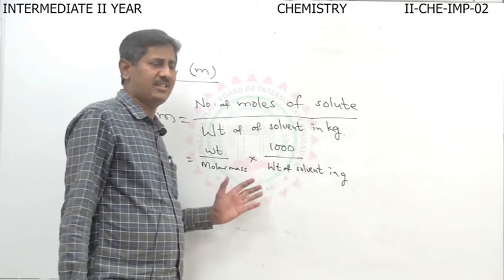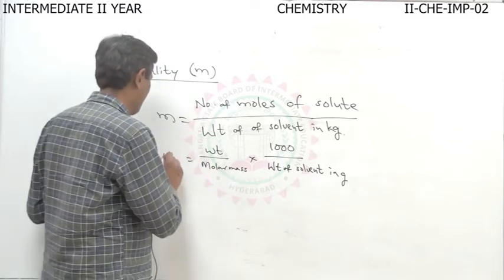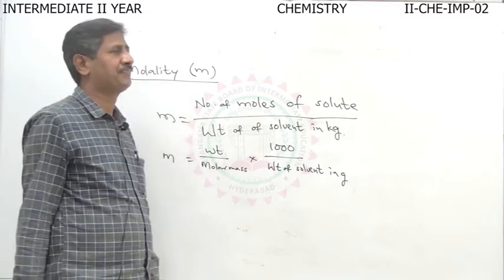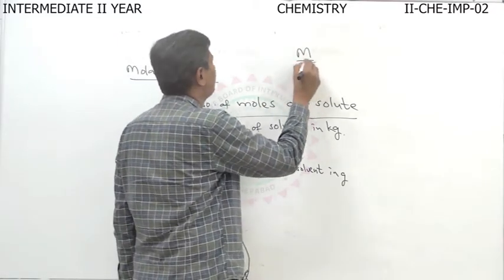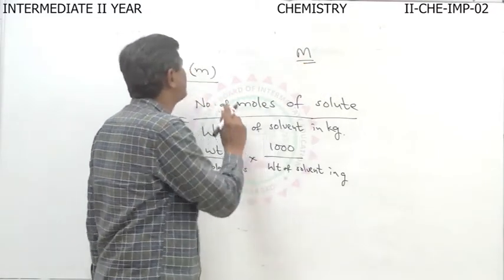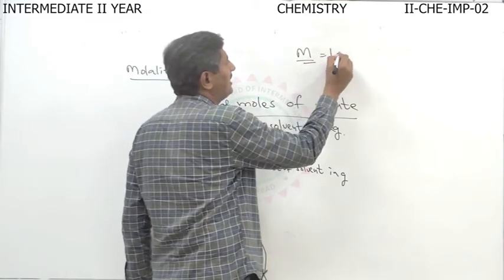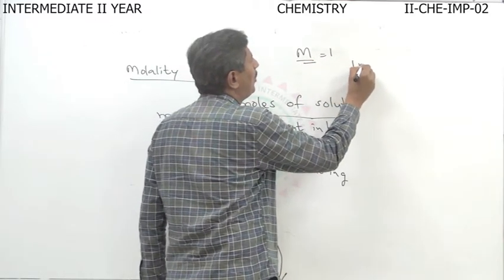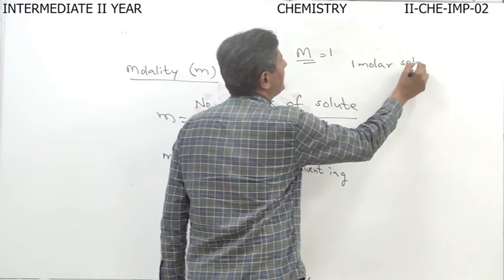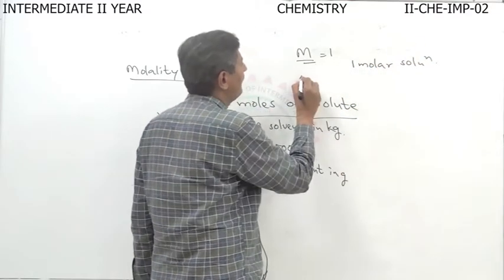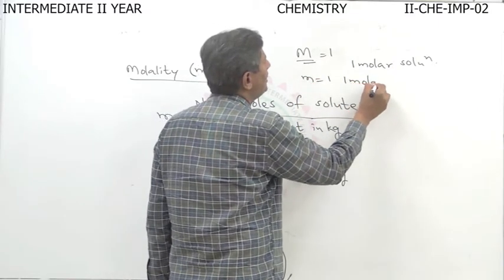The molality formula is: weight of solute divided by molar mass, multiplied by 1000 divided by weight of solvent in grams. When capital M is molarity and small m is molality — when M equals 1, the solution is called a 1 molar solution; when small m equals 1, it is called a 1 molal solution.